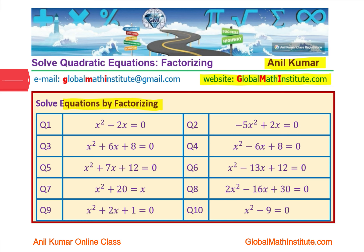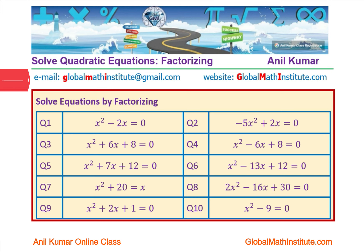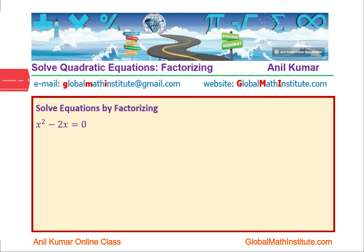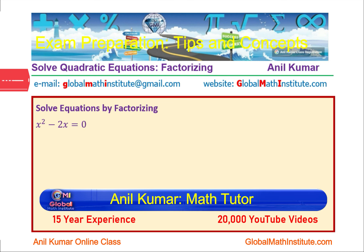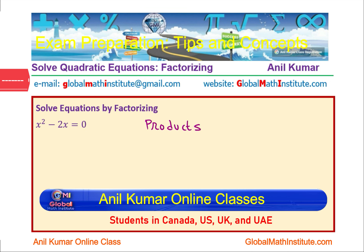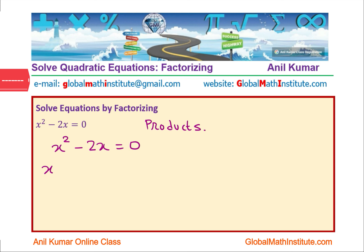Let's begin with the very first question. You can see the variety — the coefficient could be negative, there could be a leading coefficient which is not 1, or we could have 2 terms or 3 terms. The practice set includes even more variety. The process of factorizing really means to write an expression as a product of two factors. That is the core concept.